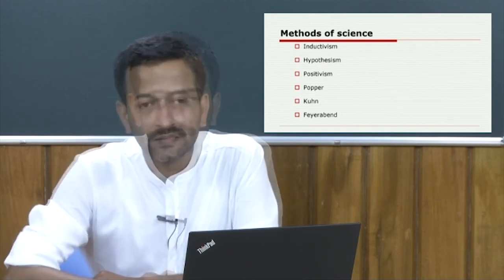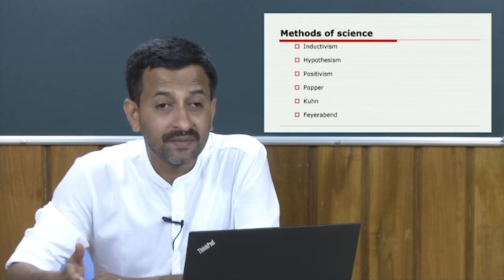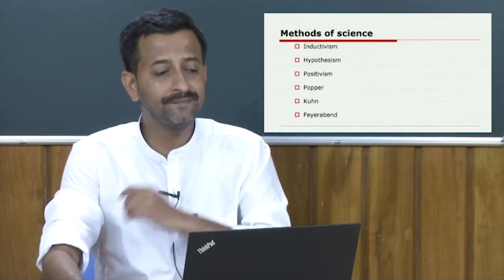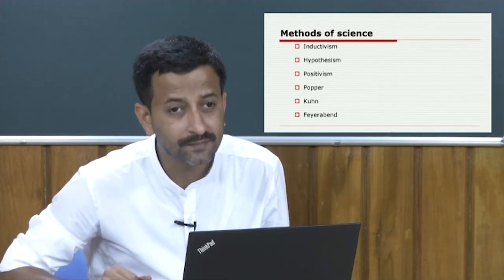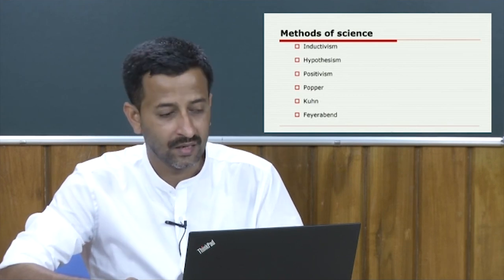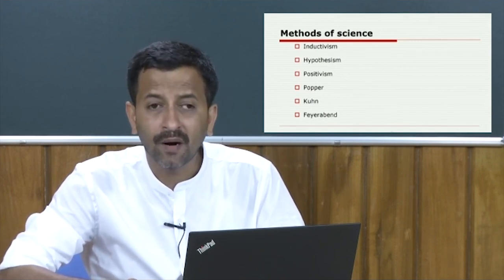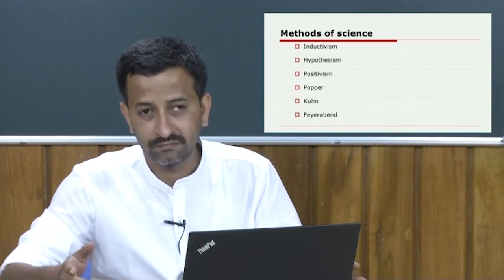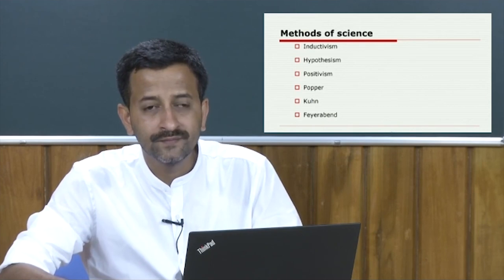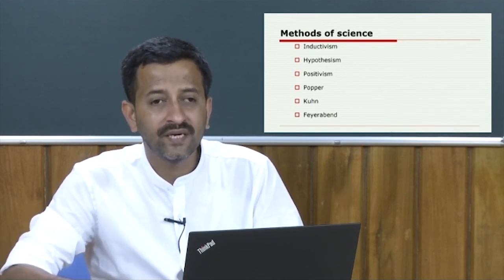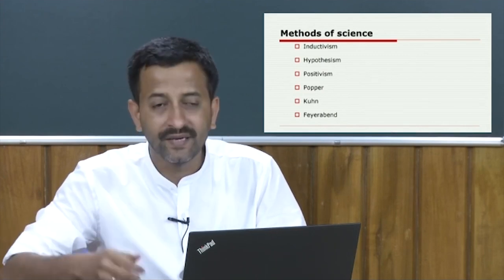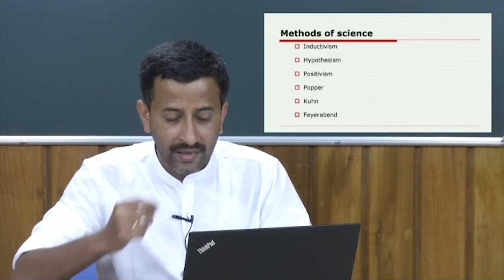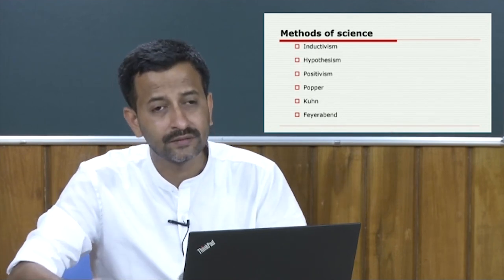That particular dilemma — how can I conclude all men are mortal while you and I are still alive — has been raised by proponents of inductivism as a charge against hypothesis. We will discuss positivism, then systematic falsifiability by Karl Popper, then the structure of scientific revolutions propounded by Thomas Kuhn, and then how Feyerabend tried to reject any kind of existing method — that is why he wrote 'Against Method.' Let us do this exercise one by one.